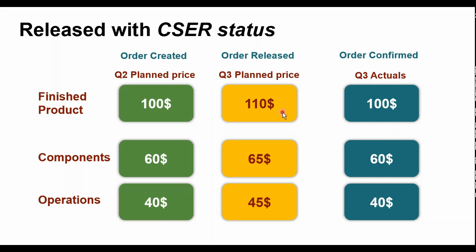During the settlement process, the variance of $10 is going to be observed by the costing team. We are just talking about a small figure here, but when you look at a huge quantity or volume of orders, that would create a huge difference in dollar value.